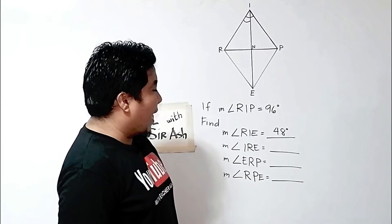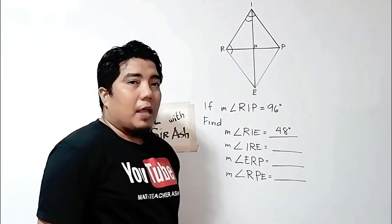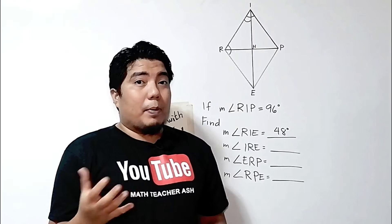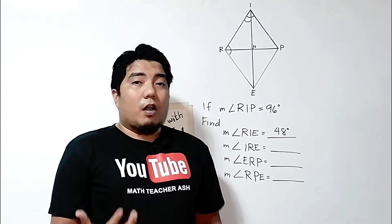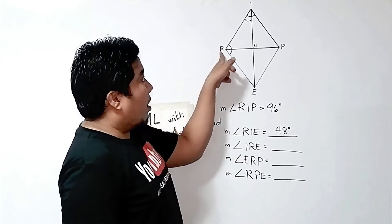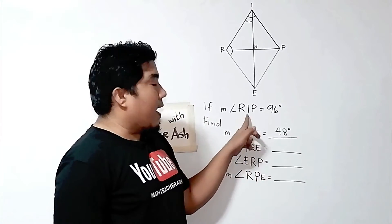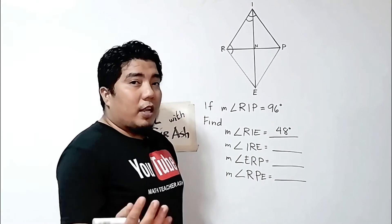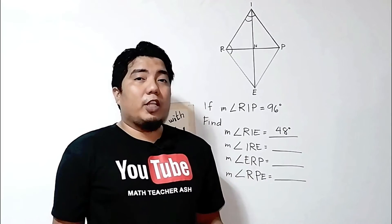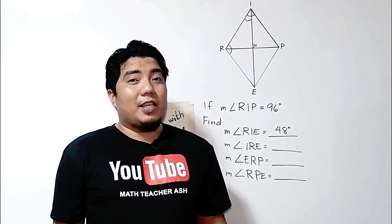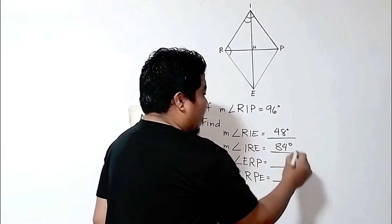For the next question — the measurement of angle IRE — remember that in the properties of a parallelogram, one property states that the consecutive angles of a parallelogram are supplementary. Angle R and angle I are consecutive angles, therefore they are supplementary. Since angle I is already given as 96 degrees, what is needed to make it 180 degrees? That is 84 degrees.